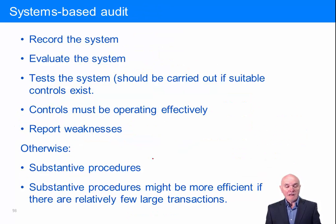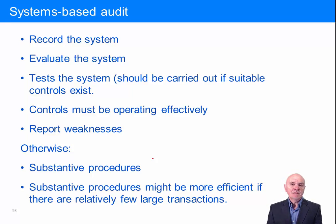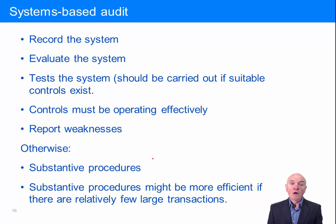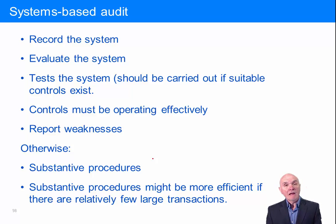What are the steps in the systems-based audit? The first thing we have to do is record the system, because unless you record it, you won't understand it — and in particular, you won't understand where there may be control mechanisms at work. We have to record whether overtime has been authorized, whether issues from stores have been authorized, whether people reconcile supplier statements through the payables ledger, and whether there's a regular reconciliation between the cash account and the bank.